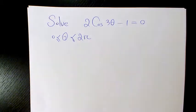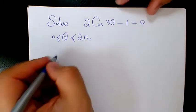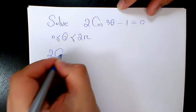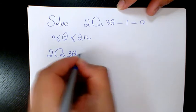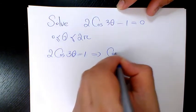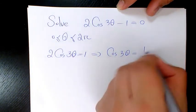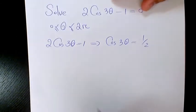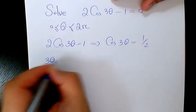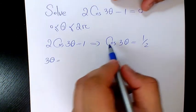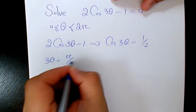it for theta between 0 and 2π. First thing I'm going to do is have 2 times cosine 3 theta equals 1, so cosine 3 theta equals 1 over 2. So 3 theta is going to be, we know cosine π over 3 is 1 over 2, so it's going to be π over 3